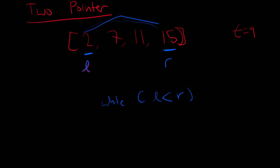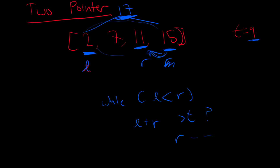We take the sum of the two values at left and right. The sum is 17 — greater than the target. That means we're too big, so we move right to the left, decrementing right. Now right points to 11, and 2 plus 11 is 13 — still bigger than 9, so we decrement right again. Now right points to 7, and 2 plus 7 equals 9, which matches the target. We can return these two indices.